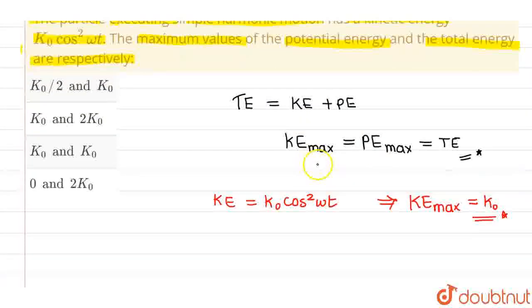So, if maximum kinetic energy is k0, then same will be the maximum potential energy, which is again k0. Potential energy maximum is also equals to k0. Similarly, total energy will also be equals to k0.